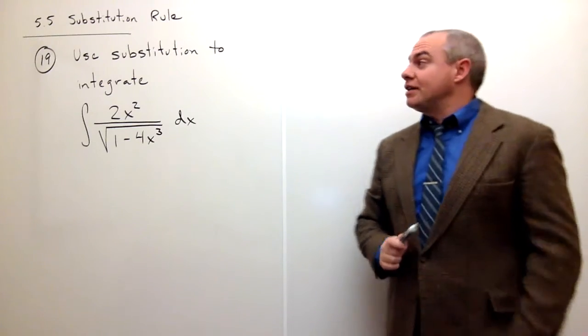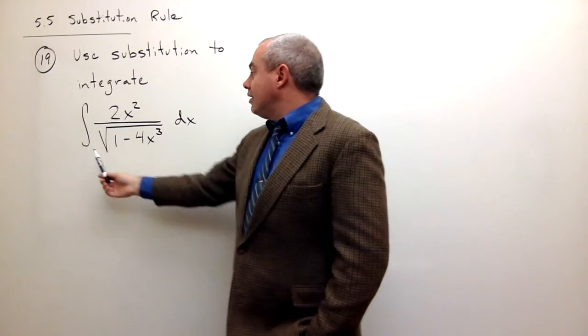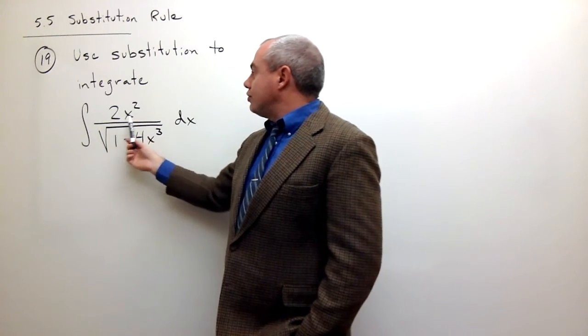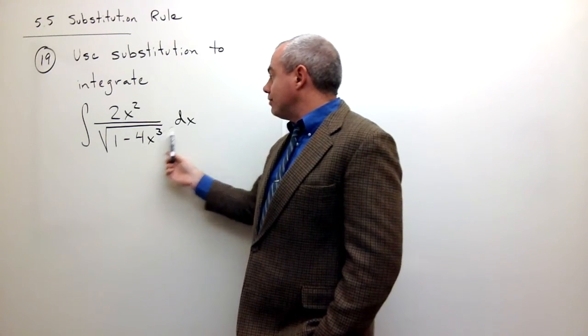In problem number 19, we'd like to use substitution to integrate the integral of 2x squared divided by the square root of 1 minus 4x cubed dx.